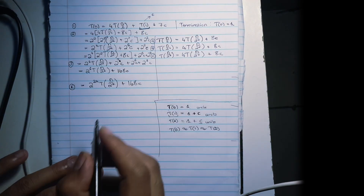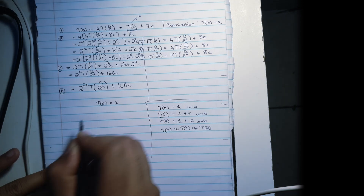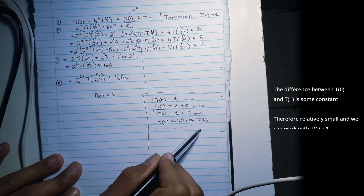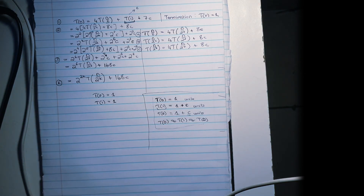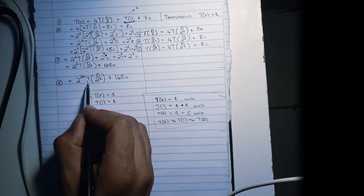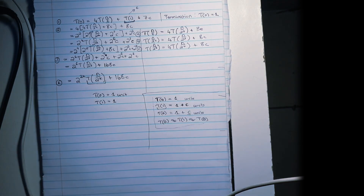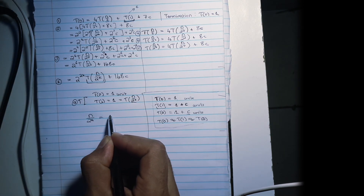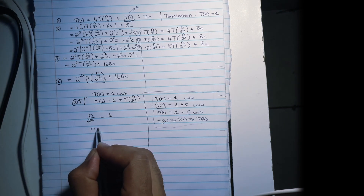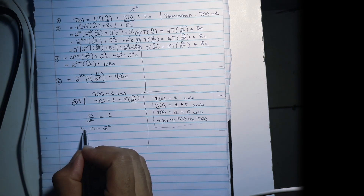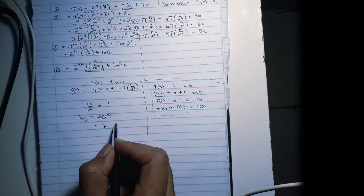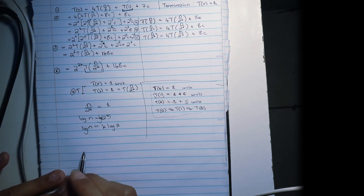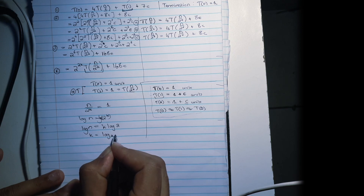We have T of zero equals one. Remember, this is similar to saying T of one equals one approximately. This means that at termination, this function is going to take only one unit of time to compute. So N over 2^K equals one. We cross-multiply: N equals 2^K. We take the log of both sides and bring K in front using logarithm rules. Then we divide both sides by log 2, finding that K equals log₂(N).